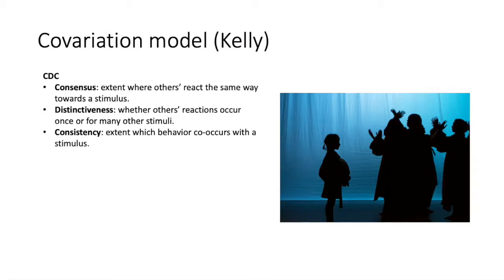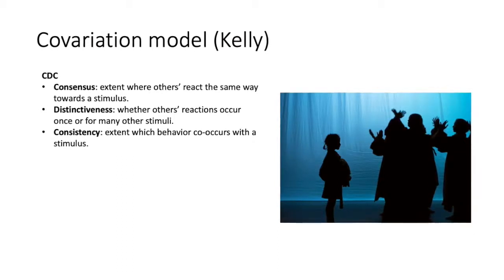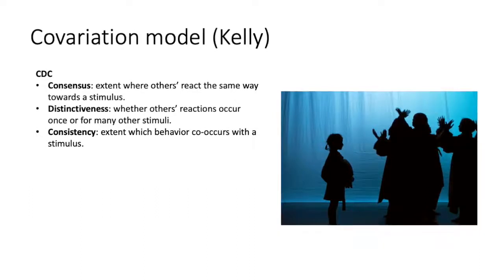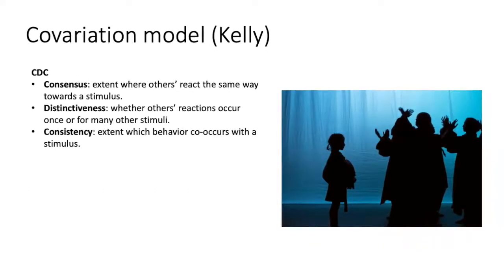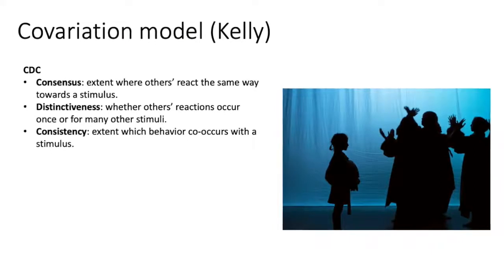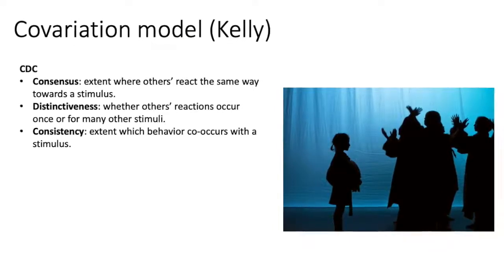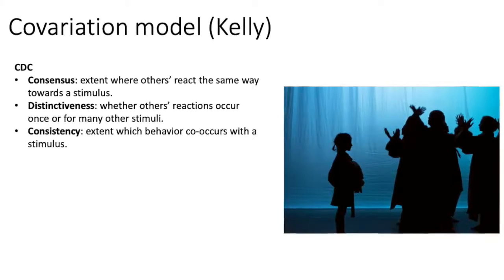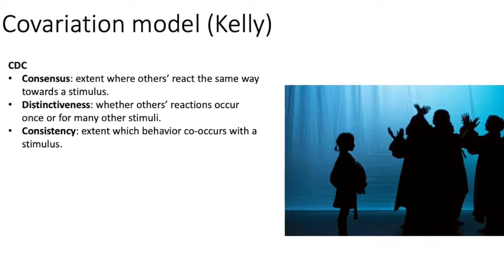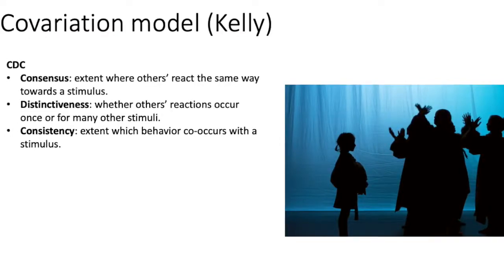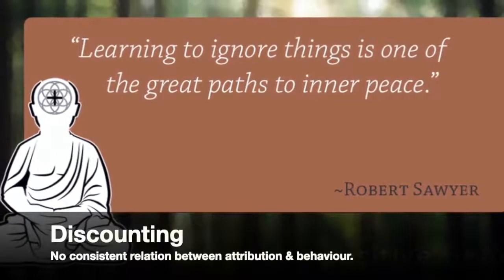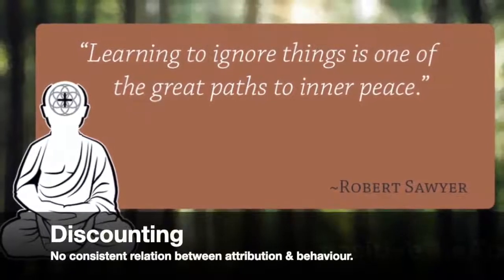Kelly proposed the covariation model, in which individuals assign causes to behaviours that co-vary with other behaviours. This covariation principle is made up of CDC: Consensus, Distinctiveness, and Consistency. Consensus is the extent to which other people react in the same way towards a certain stimulus. Distinctiveness is whether people's reactions occur only with one or many stimuli. Consistency is the extent to which behaviour co-occurs with a stimulus. Discounting occurs if there is no consistent relationship between attribution and behaviour, and thus the cause becomes disregarded.